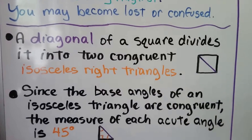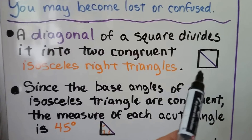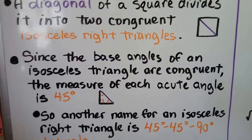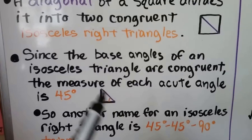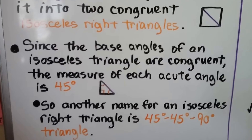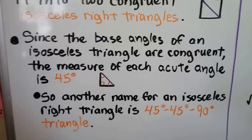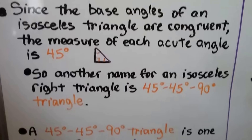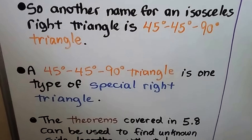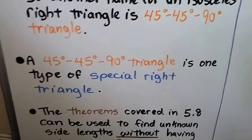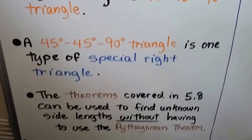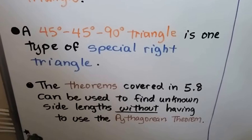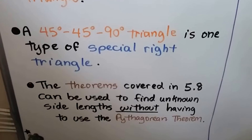A diagonal of a square divides it into two congruent isosceles right triangles. Since the base angles of an isosceles triangle are congruent, each acute angle measures 45 degrees. So another name for an isosceles right triangle is a 45-45-90 triangle, which is one type of special right triangle. The theorems we're covering in 5.8 can be used to find unknown side lengths without having to use the Pythagorean theorem.